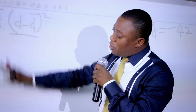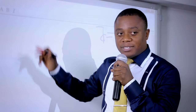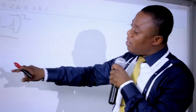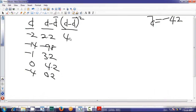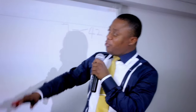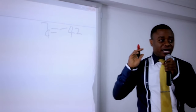Now square each of those values: 2.2 squared equals 4.84; 9.8 squared equals 96.04; and so on for the rest. When you finish squaring all values, add them all together. That sum gives the numerator of the standard deviation formula.